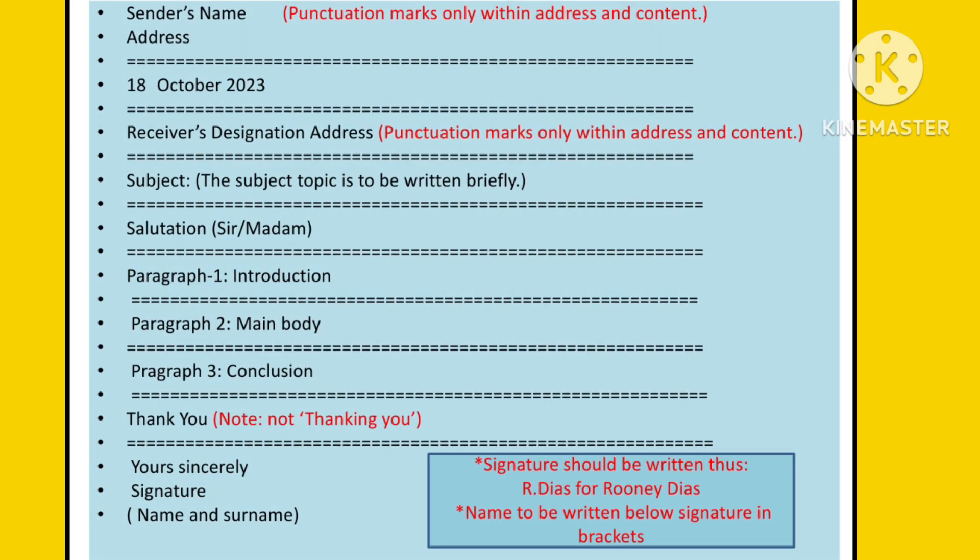So let's begin writing a letter. You will begin with the sender's name and address. Note that the punctuation marks will be only within the address, not on the outside. Leave a line and write the date — the date will be in the same format given. Leave a line and write the receiver's address. Leave a line and write the subject.